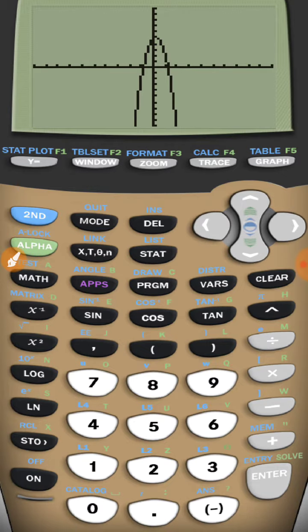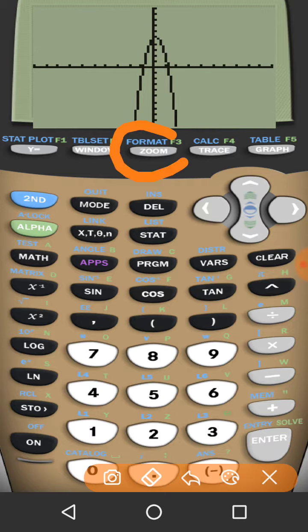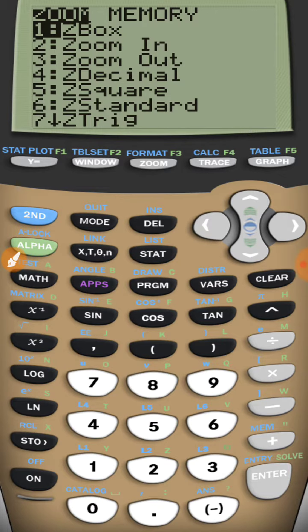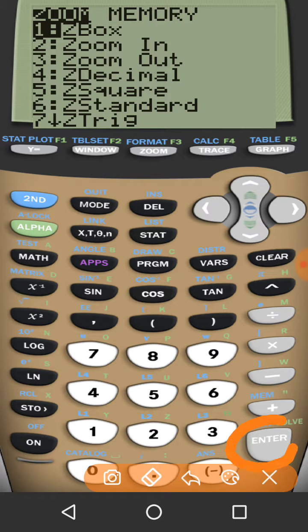The other way to zoom in is to use a zoom box. I'm going to click on zoom again here. You notice zoom box is the first option. I'm going to press enter or 1.